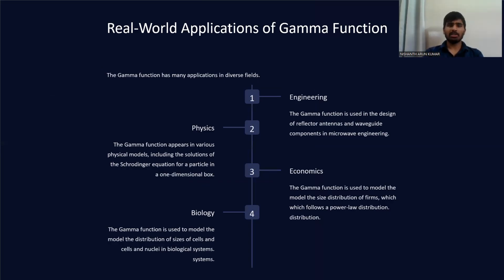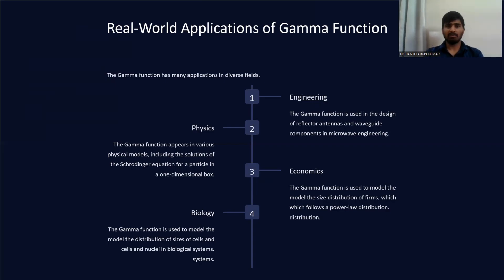Now let's move on to the wide applications of the gamma function. It is used in solving differential equations, particularly those involving exponential functions. The gamma function is also essential in physical sciences such as quantum mechanics, where it appears in solutions to Schrödinger's equation. Additionally, it finds applications in the computation of probabilities in statistics and in the estimation of certain integrals across various fields.